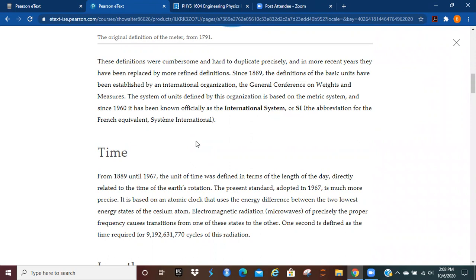Since 1889, the definitions of the basic units have been established by an international organization, the General Conference on Weights and Measures. And the system of units defined by this organization is based on the metric system. And since 1960, it has been known as the International System, or SI. If you read it in French, then you can see why the letters are backwards.